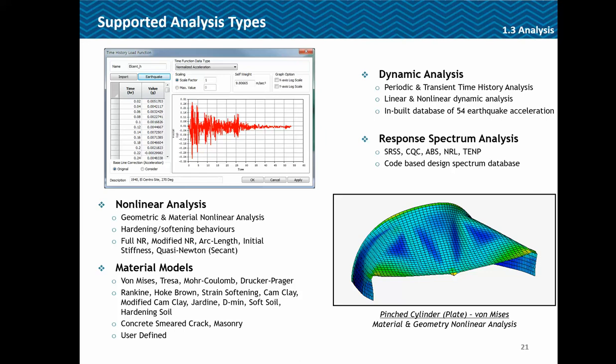Geometric and material nonlinear analysis includes hardening and softening behaviors. Methods include full Newton-Raphson, modified Newton-Raphson, arc-length, initial stiffness, or quasi-Newton method. The material models include Von Mises, Tresca, Mohr-Coulomb, Drucker-Prager, or Rankine-Hoek-Brown — these are mainly soil-based models. For concrete we have a concrete smeared crack model and the masonry model, and you can also define user-defined material models.